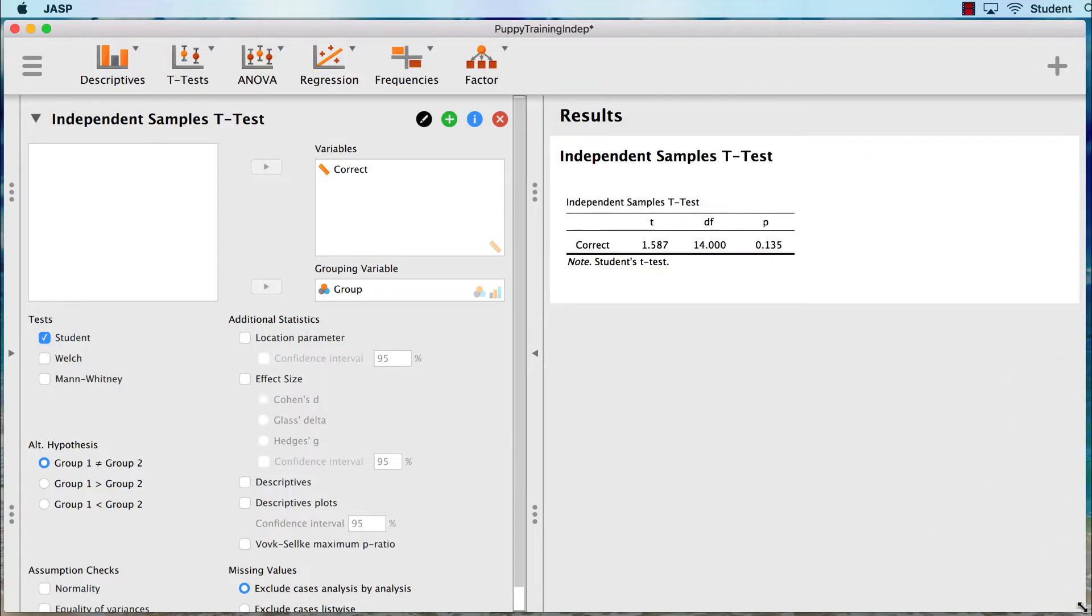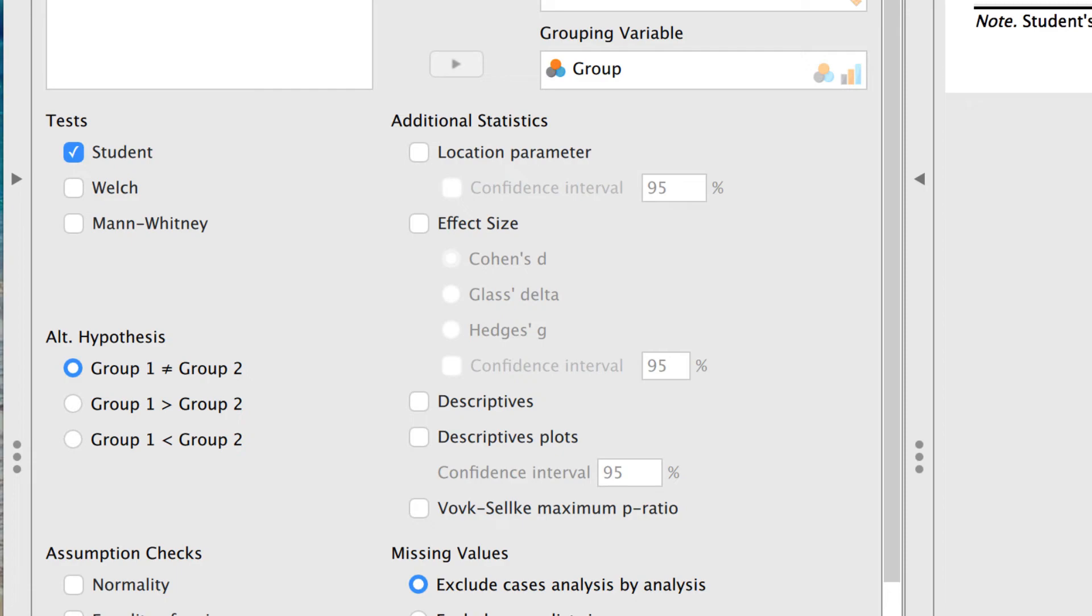This is a good start. I can already tell that the t-test is non-significant, but I want to know much more. All I need to do is select the options that I prefer. I am using the popular old-school student's t-test. However, the Welch's t-test is slowly becoming the preferred t-test because of how it is not affected by variances in the groups that are not equal. The Mann-Whitney is a non-parametric alternative test. We don't need that.